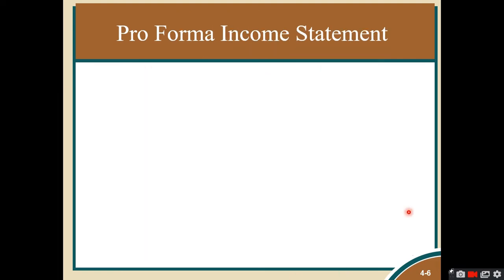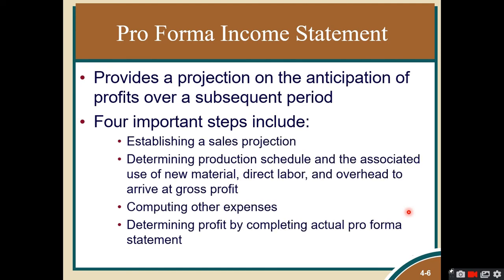The pro forma income statement provides a projection of anticipated profits over subsequent periods. There are four important steps: first, establish a sales projection; second, determine production schedules and associated material usage, direct labor, and overhead to arrive at the gross profit — essentially computing cost of sales; third, anticipate other expenses; and finally, compute the profit.